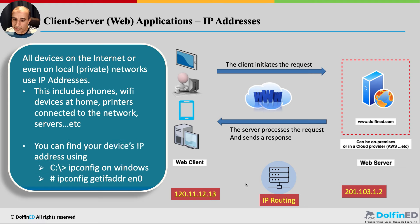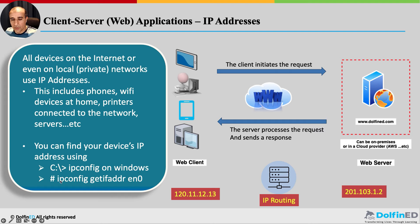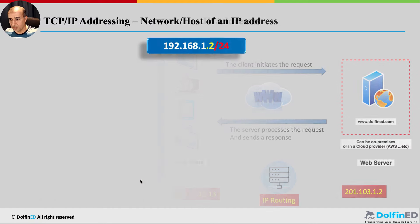If you're on a Windows machine, you can use the command prompt command 'ipconfig' to find your IP configuration. On Mac or Linux, you can run 'ipconfig getifaddr en0' (or Ethernet 0) to find your IP address.